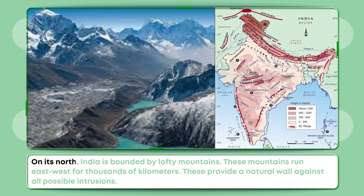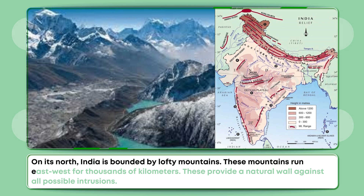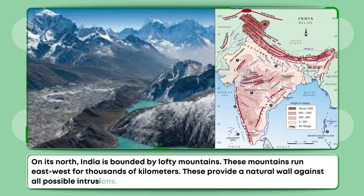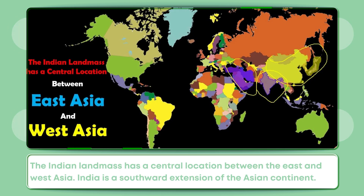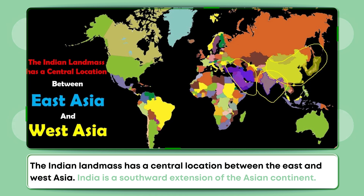On its north, India is bounded by lofty mountains. These mountains run east-west for thousands of kilometers and provide a natural wall against all possible intrusions. The Indian landmass has a central location between the East and West Asia. India is a southward extension of the Asian continent.